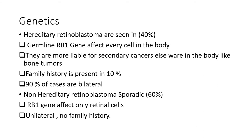There are two important types of this mutation. We have hereditary retinoblastoma, which accounts for 40% of cases, and the non-hereditary or sporadic type, seen in 60%. In the hereditary type, the germline RB gene is found in all cells of the body. The person is more liable for secondary cancers, family history is present in 10%, and 90% of cases are bilateral or trilateral with multifocal disease. In non-hereditary retinoblastoma, the RB gene usually affects retinal cells only — it is unifocal, unilateral, and there is no family history.